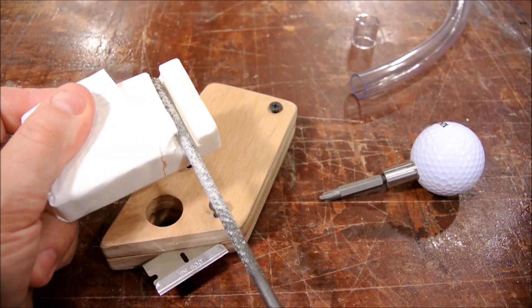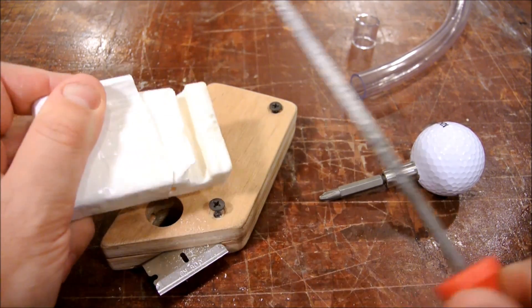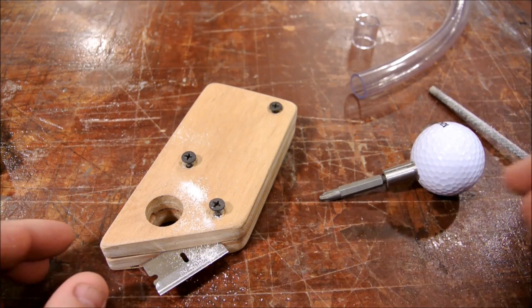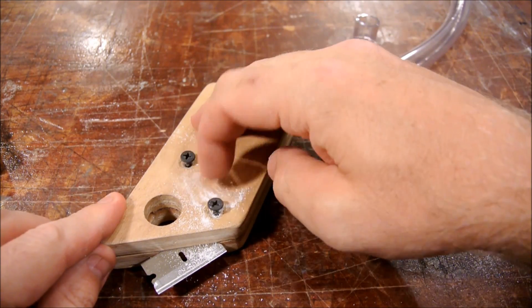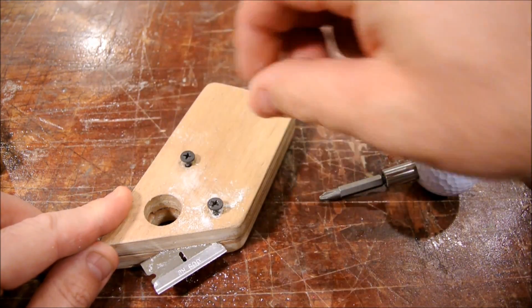I'm using just a common white bar soap to make a dry lubricant and this can be used on the screws, on the razor blade, and even in here.